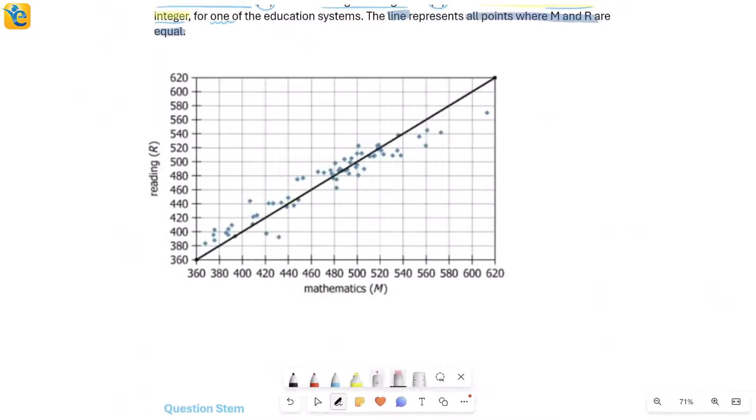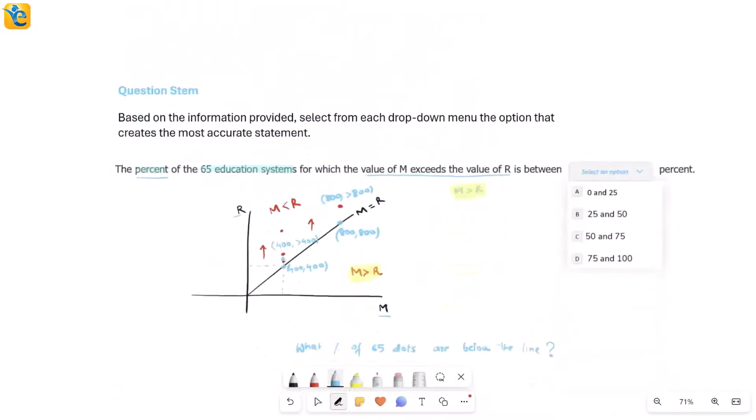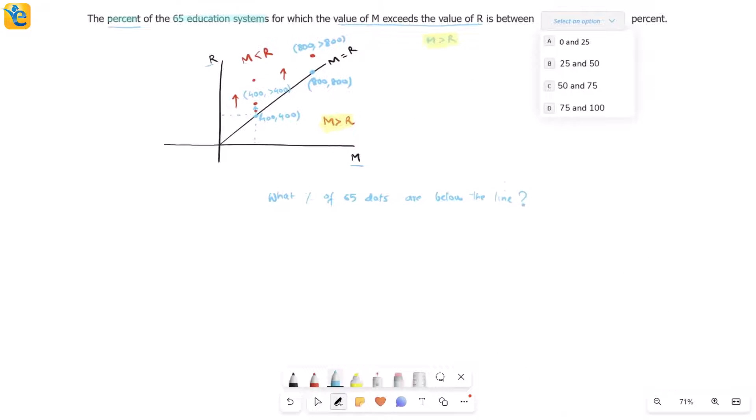When you would count them, you would find them to be 26 points. And if I want to find a percentage that these form out of 65, it's going to be 26 out of 65 times 100. They are both divisible by 13 and I get a neat 40%. Now therefore, where does 40% lie in the range? Well, it's surely between 25 and 50 and that's it. Part one is done.